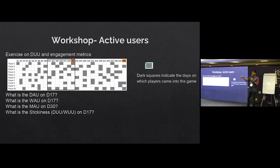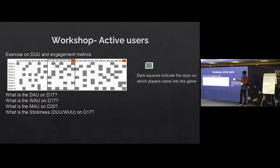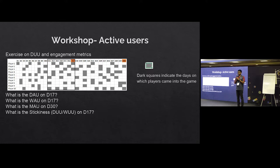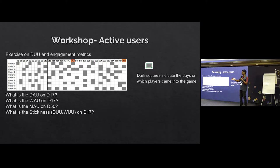This is a workshop exercise. You have 10 players as rows and each day as columns. Whenever there's a gray cell, someone came in that day. What is the DAU on D17? You have player one, player three, and player eight who came in on D17 — so your DAU that day is three. What's the WAU for D17? Looking at the last seven days with a black outline, players seven and nine haven't come any of those days — so eight out of 10 players came in, making the WAU eight.